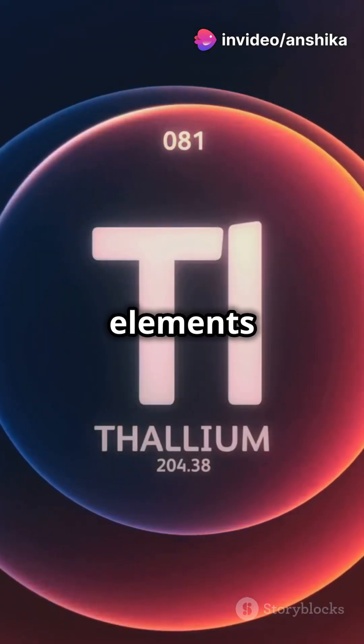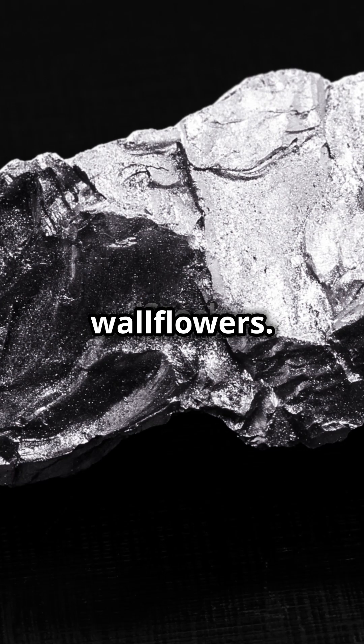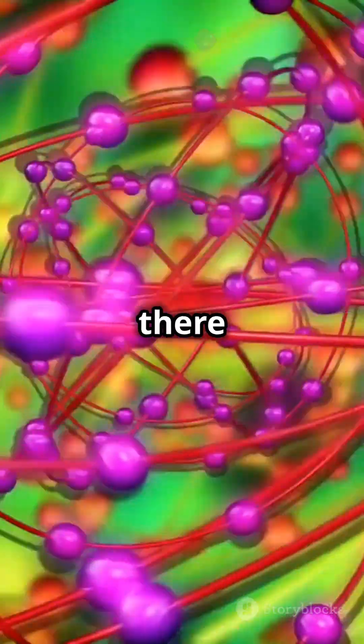In heavier elements like thallium, lead, and bismuth, their outermost S electrons are those wallflowers. They prefer to stay inert while the P electrons are out there doing all the bonding.